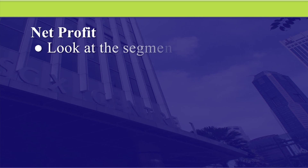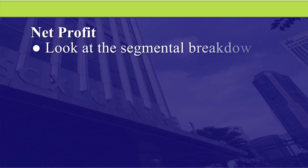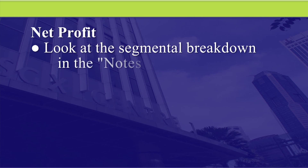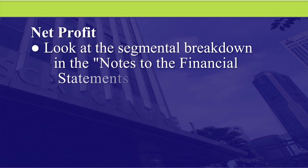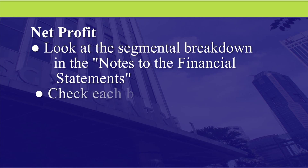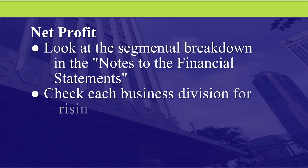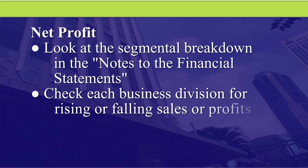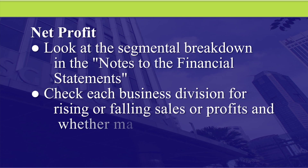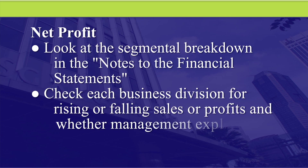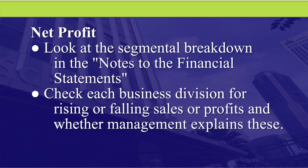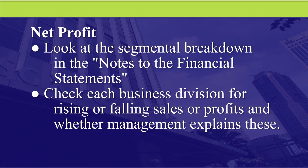Have a look at the segmental breakdown in the notes to financial statements. Go through the sales and earnings for each segment. If you see any segment that is not improving in either sales or earnings, find out — really find out — if this is explained in the management discussions. If not, do ask why.